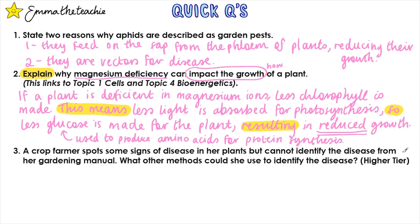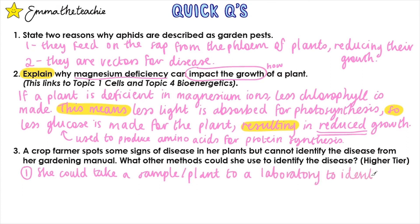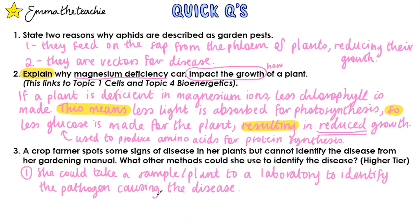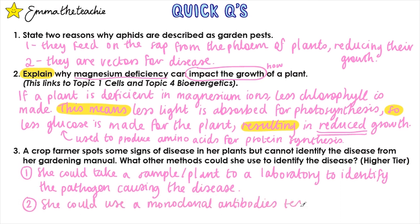Question 3: A crop farmer spots some signs of disease in her plants but cannot identify the disease from her gardening manual. What other methods could she use to identify the disease? This is a higher tier question. She could take a sample or a whole plant to a lab to identify the pathogen causing the disease, or she could buy and use a monoclonal antibodies testing kit.